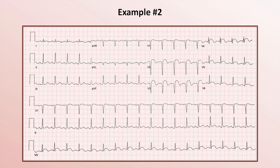Example 2. What's the rate? Using the 300 rule, there are slightly less than 3 big boxes between successive QRS complexes, which means the rate is slightly faster than 100.